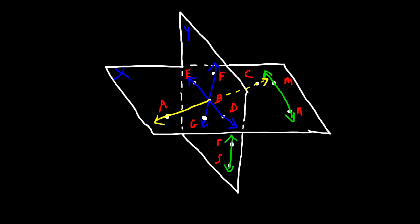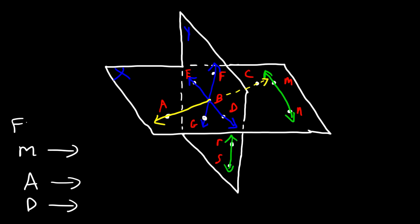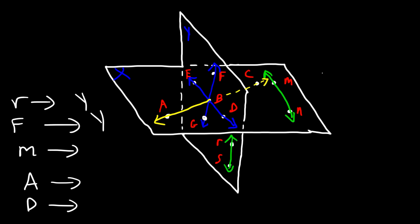Now, identify the planes that each of the following points lie on: A, D, M, F, and R. R is found in plane Y. F is also in plane Y. M is found in plane X. A is in plane X. And D is at the intersection of X and Y, so we can write both X and Y for D.